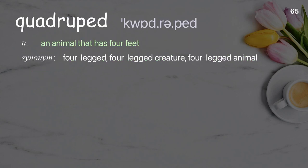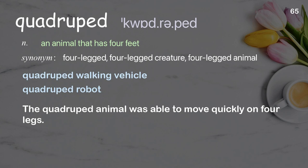Quadruped: an animal that has four feet. Examples: quadruped walking vehicle; quadruped robot. The quadruped animal was able to move quickly on four legs.